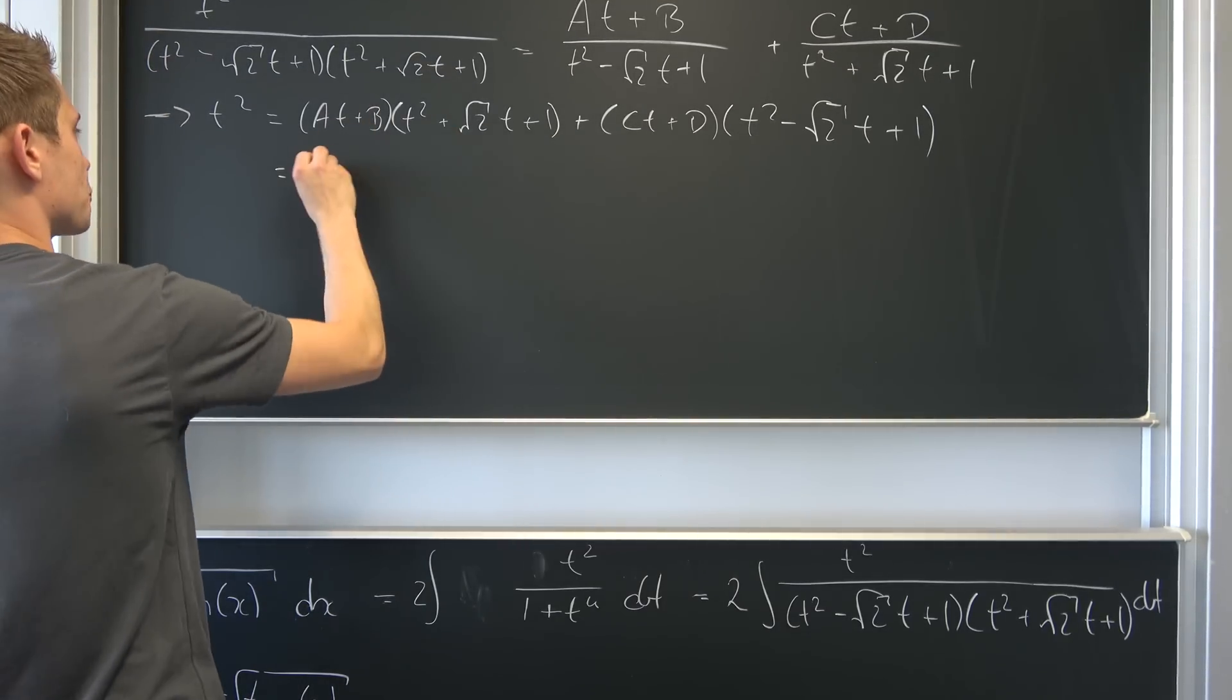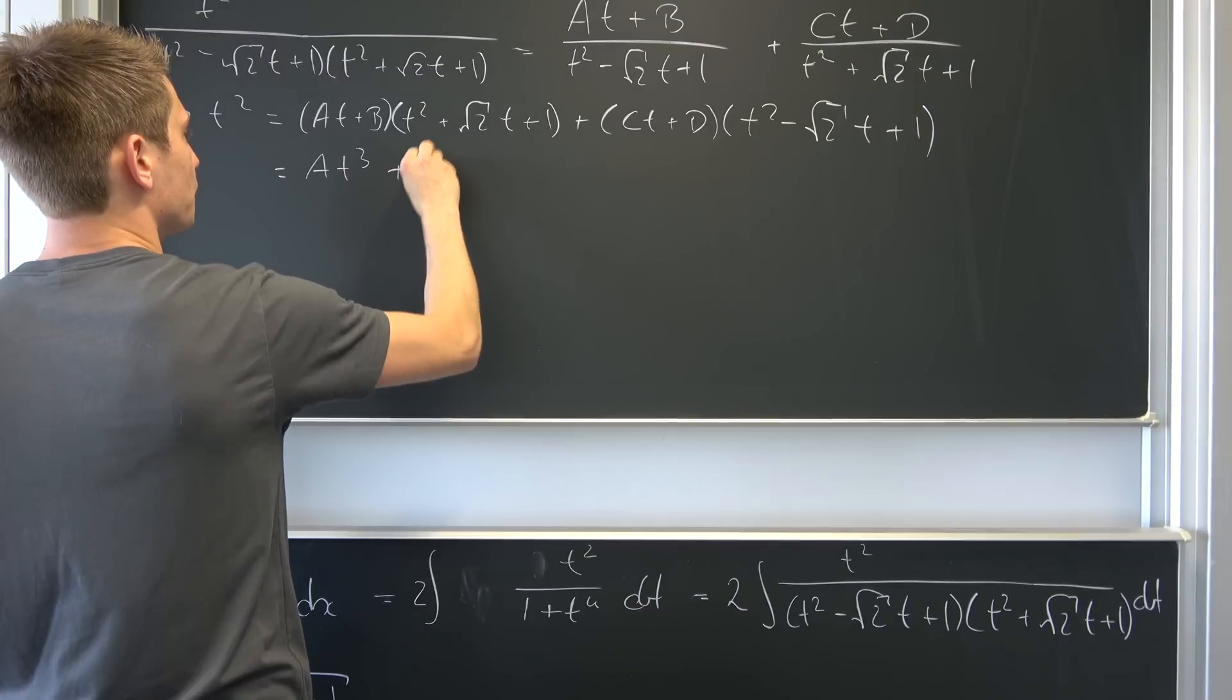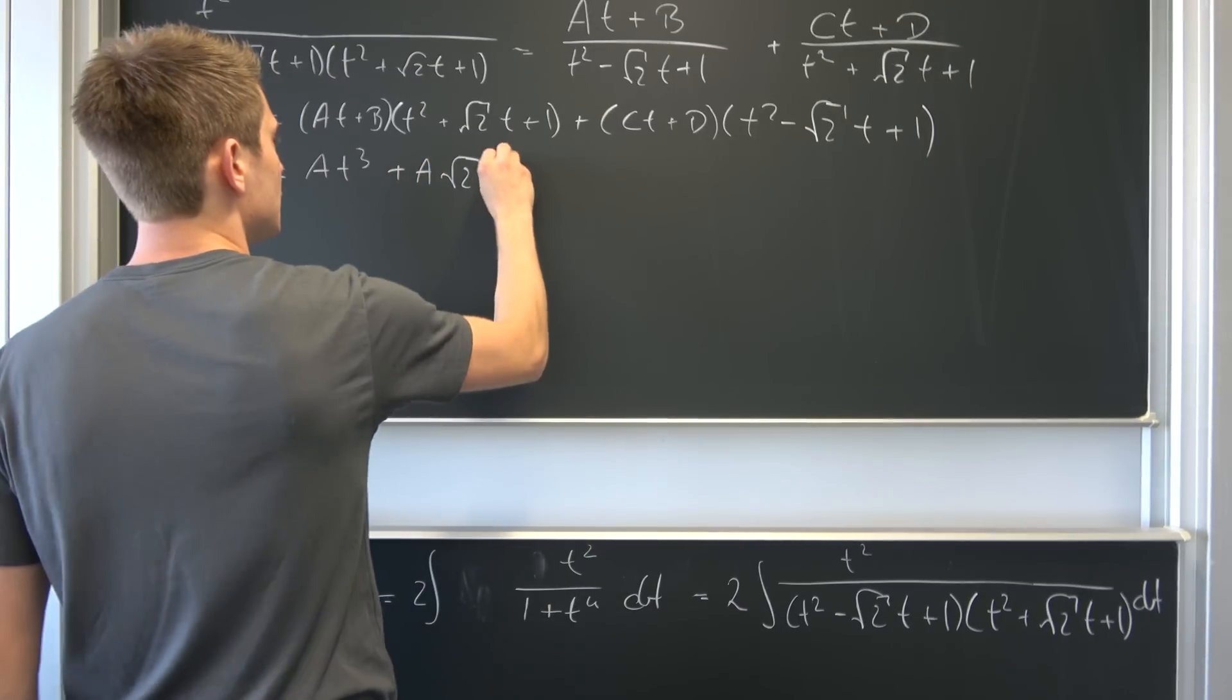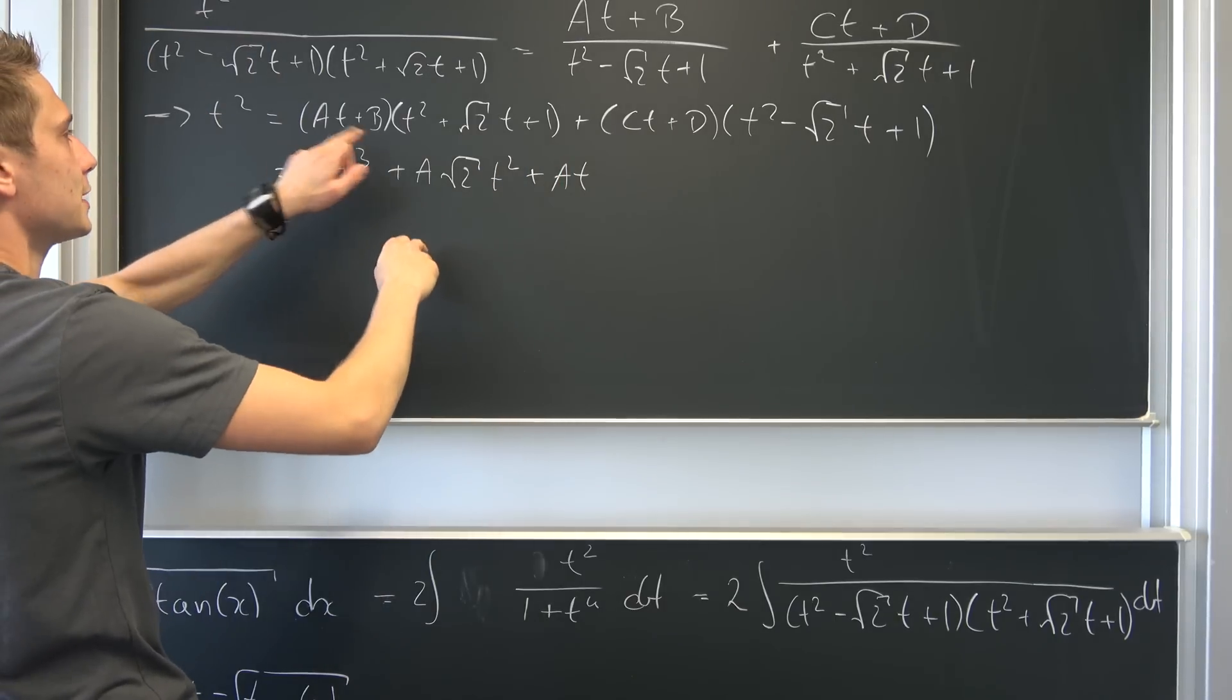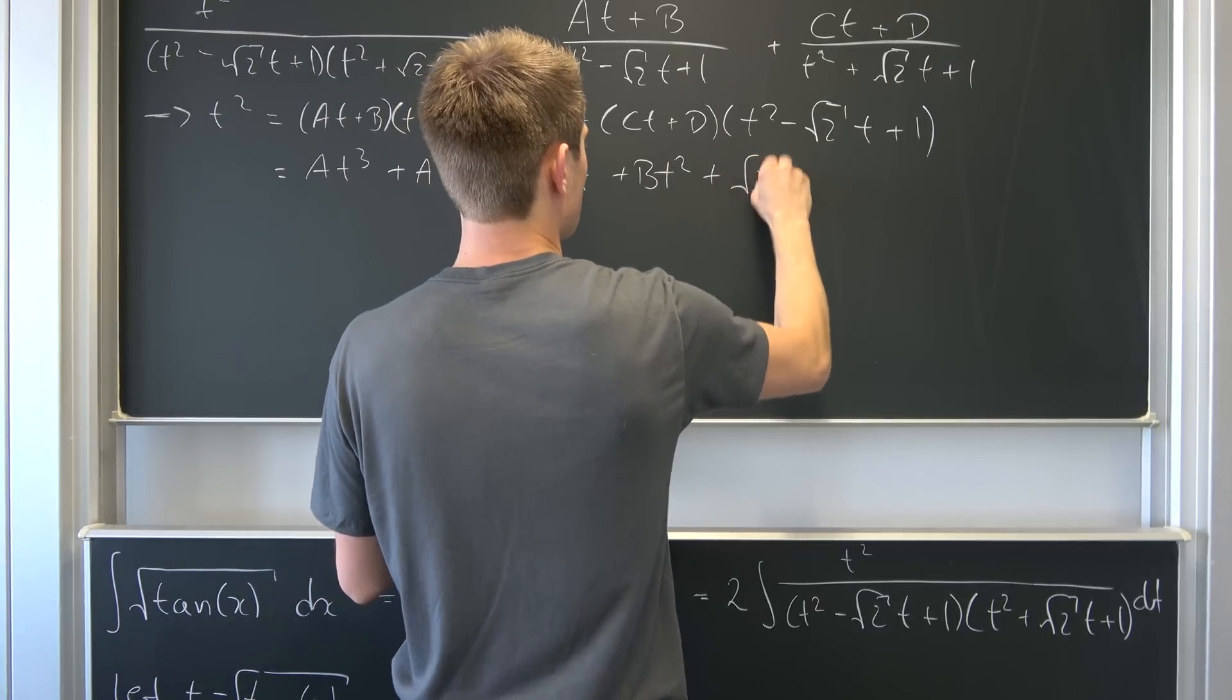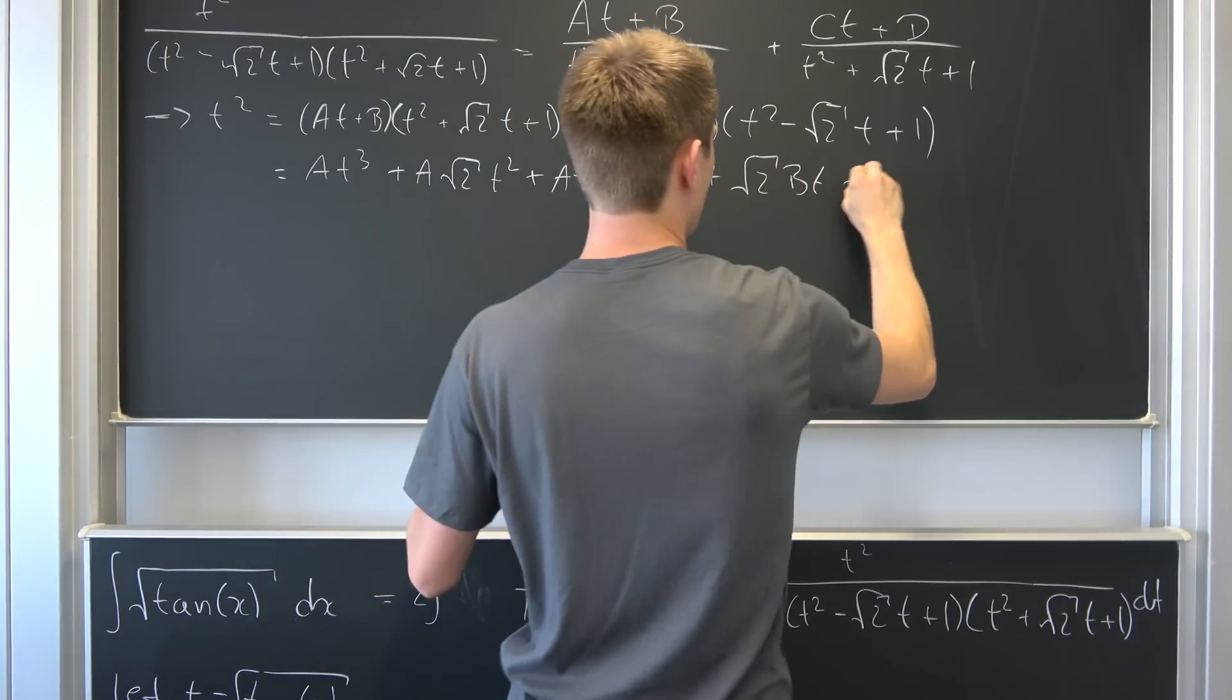So that also means, so let's write everything out. At to the third power plus a square root of 2, square root of 2 times a whatsoever times t squared plus a times t. So that was the first factor. And now for b. So plus bt squared plus square root of 2 times b times t plus b.